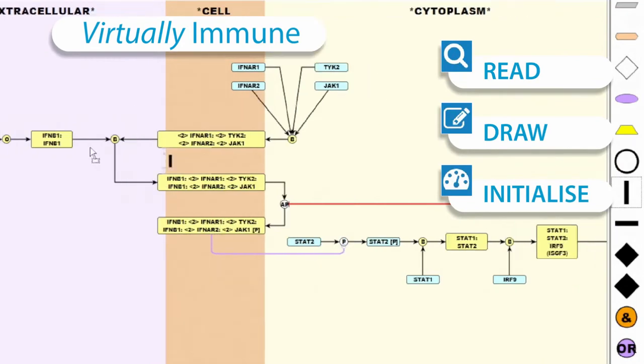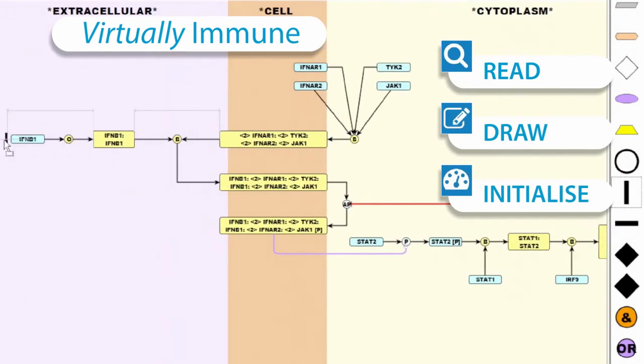Define the initial conditions of your in silico experiment. You need to decide which molecules are present at the start of your simulation experiment and relatively how much of them there might be. You define these by placing tokens on these molecules.